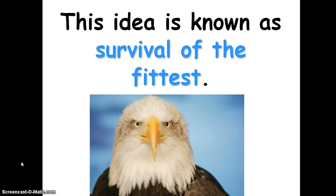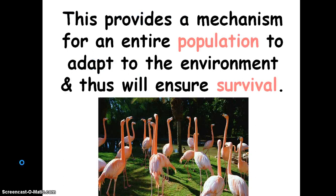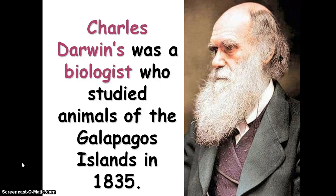This idea is known as survival of the fittest — the animals that are best suited to survive in an area, that have the best adaptations, will be the animals that live in that area. Natural selection is the process by which these fit individuals survive and reproduce to pass on advantageous traits to their offspring. You are considered the best animal or plant for that area if you are able to survive and have offspring that spread through that area, providing a mechanism for an entire population to adapt to the environment. Natural selection is how populations survive in an area, not particular individuals.